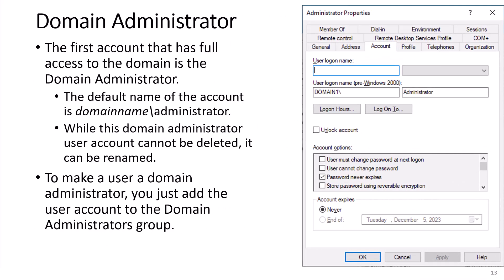The first account that has full access to the domain is the domain administrator. The default name of the account is domain name slash administrator. While the domain administrator user account cannot be deleted, it can be renamed. To make a user a domain administrator, you just add the user account to the domain administrators group.